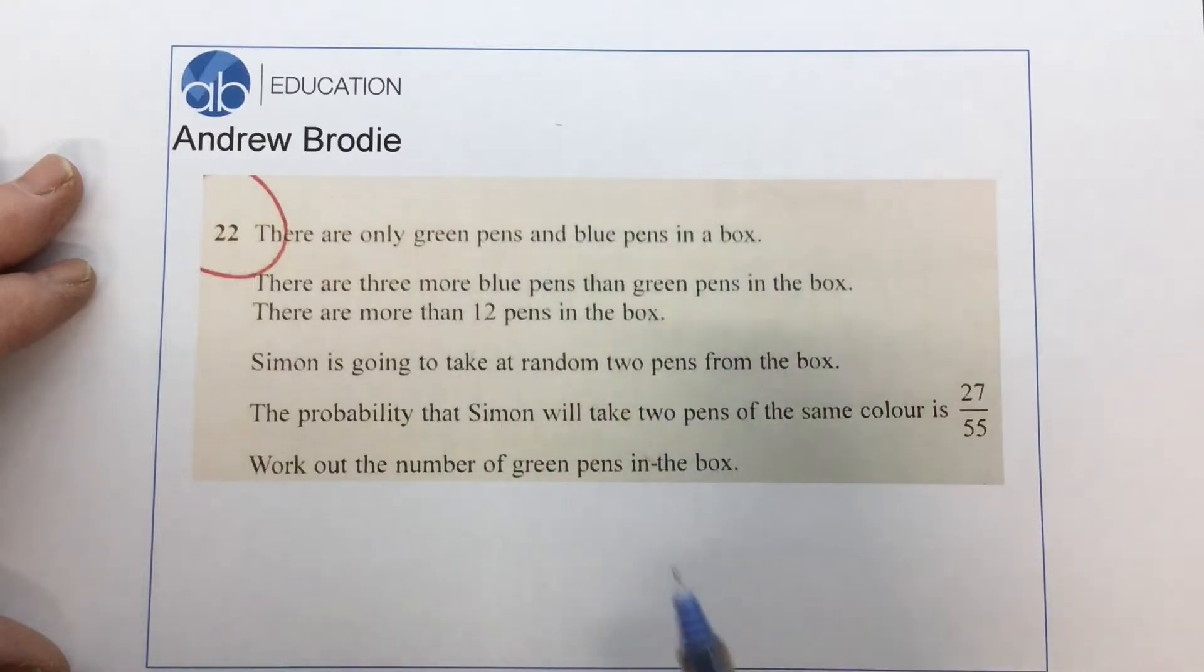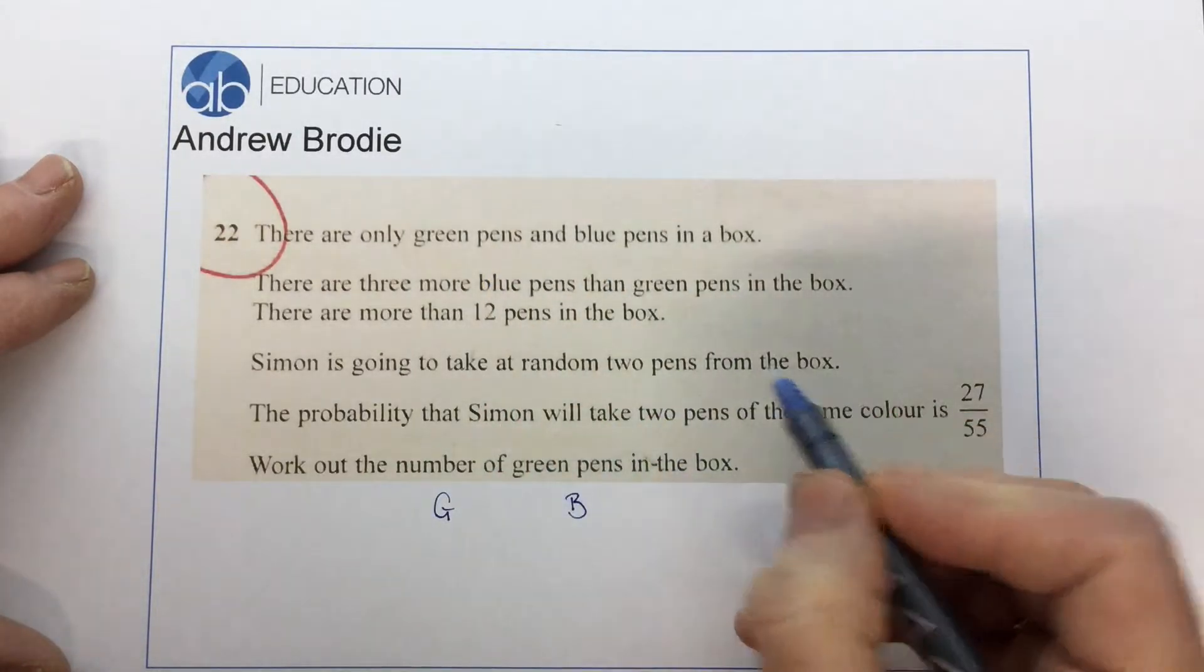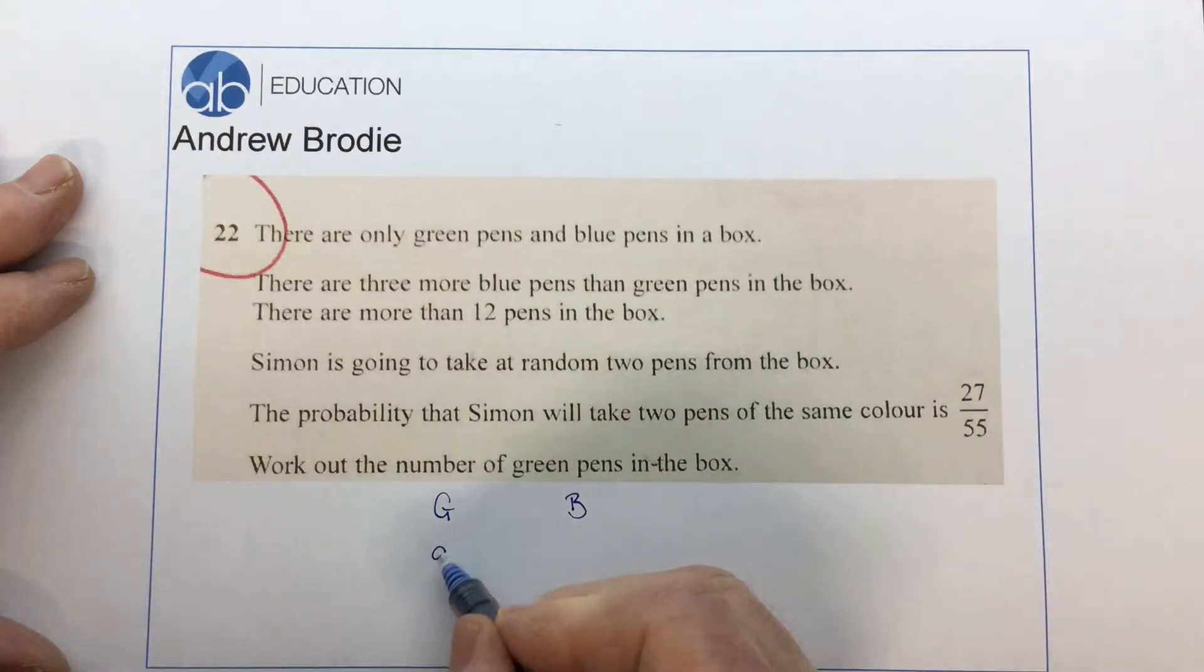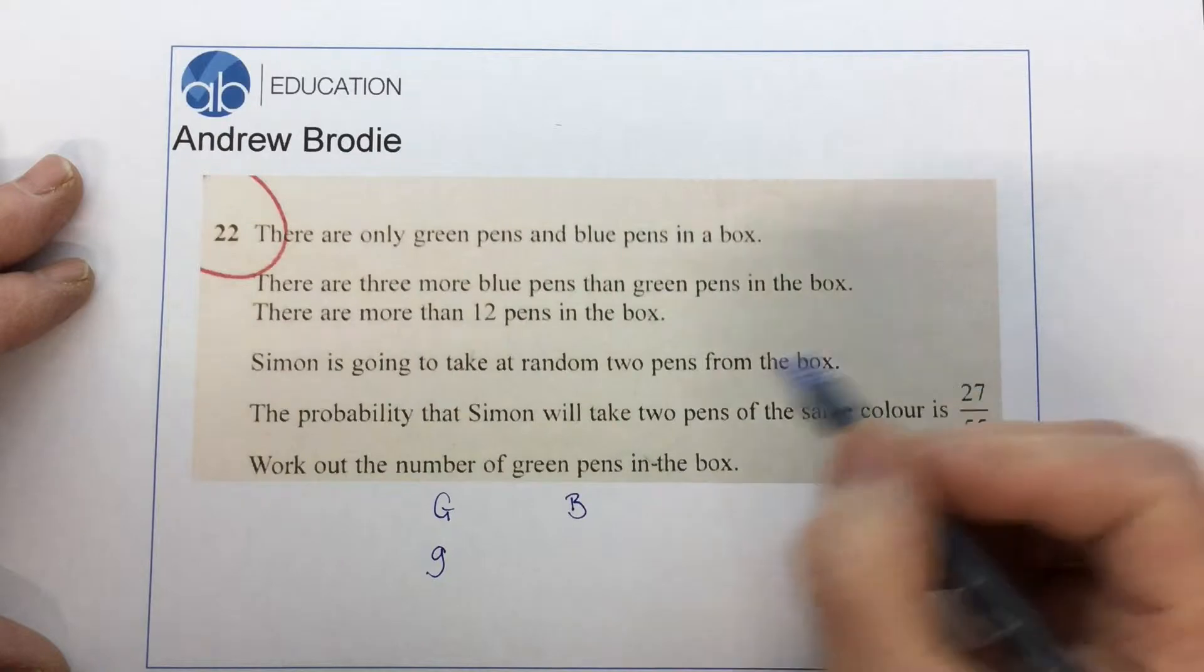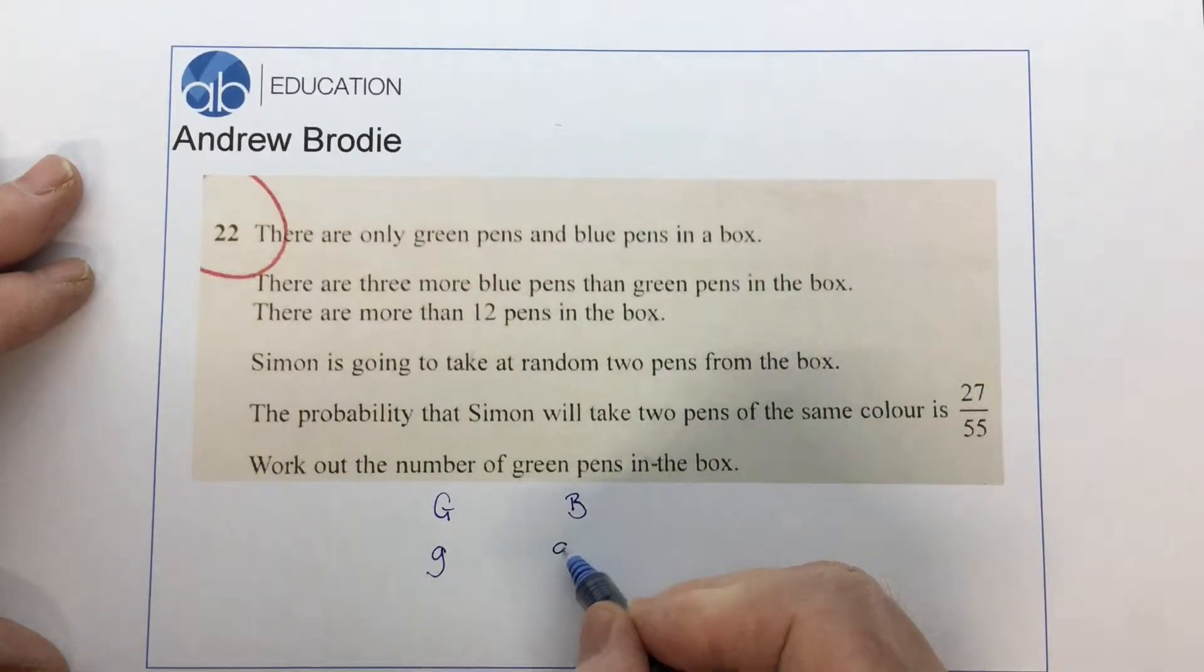There are only green pens and blue pens in a box. So I'm going to put a G and a B. I'm going to say there are g green pens because it says there are three more blue pens than green pens. So if we write g plus 3, that shows that the number of blue pens is three more than the green ones.